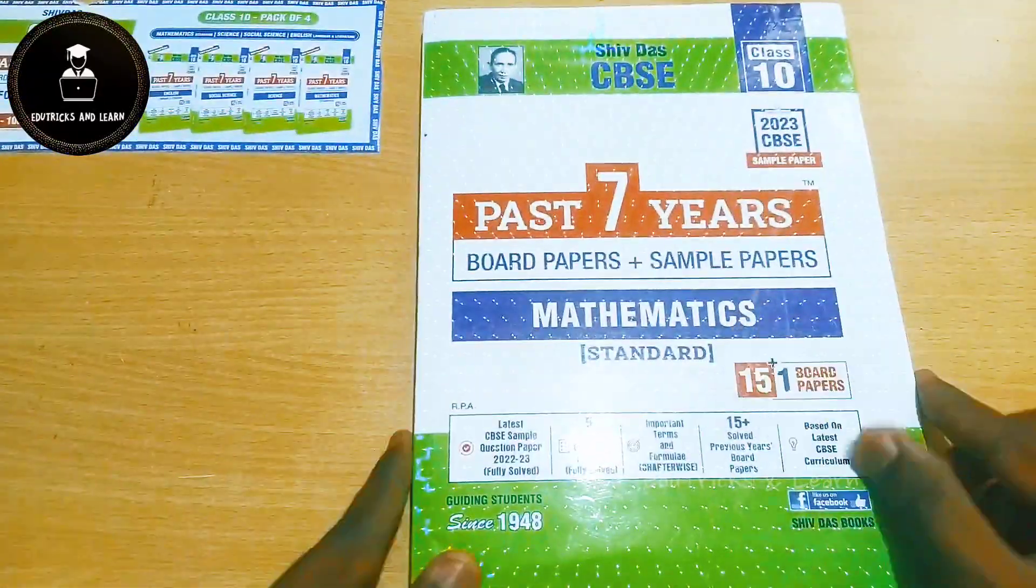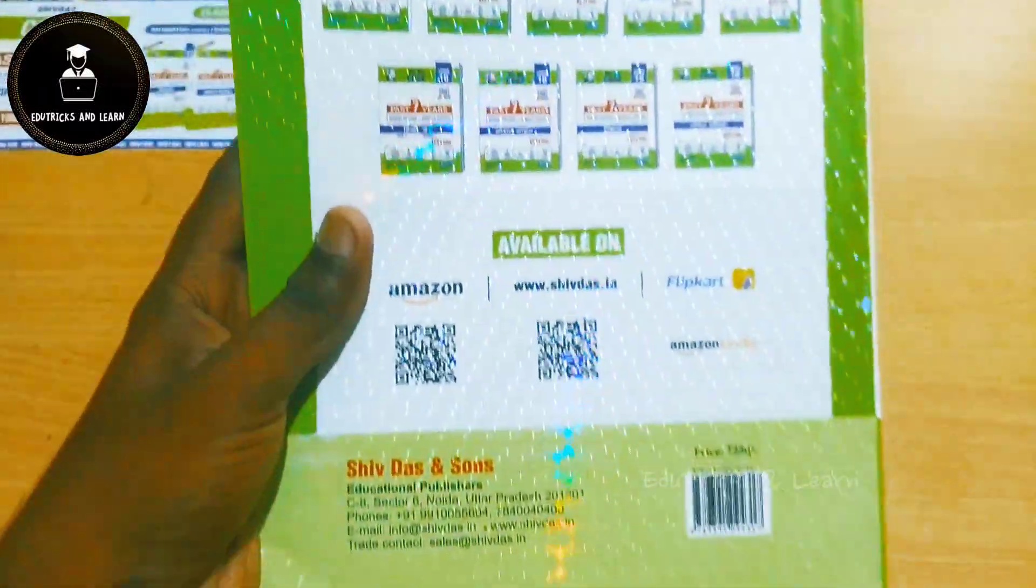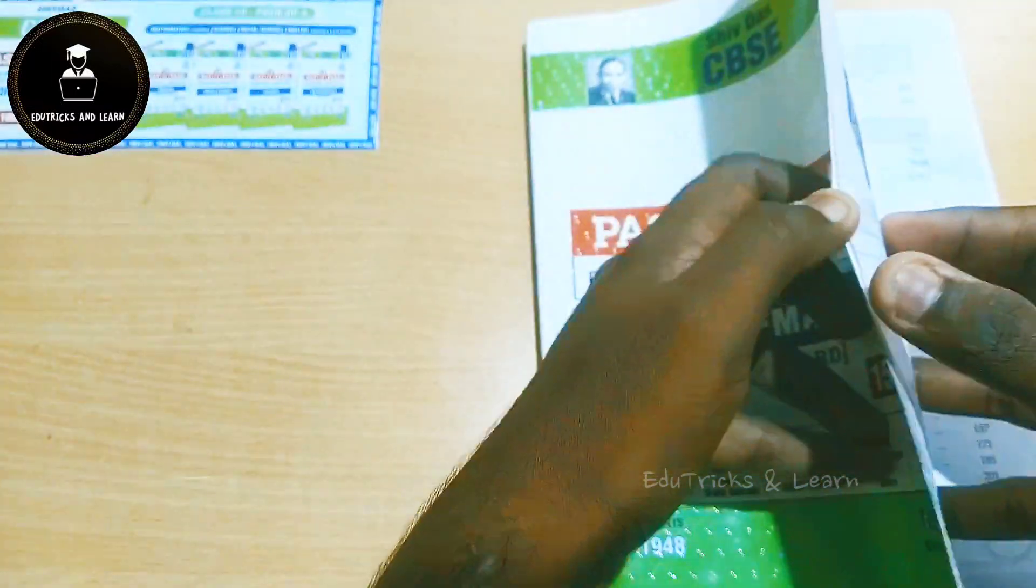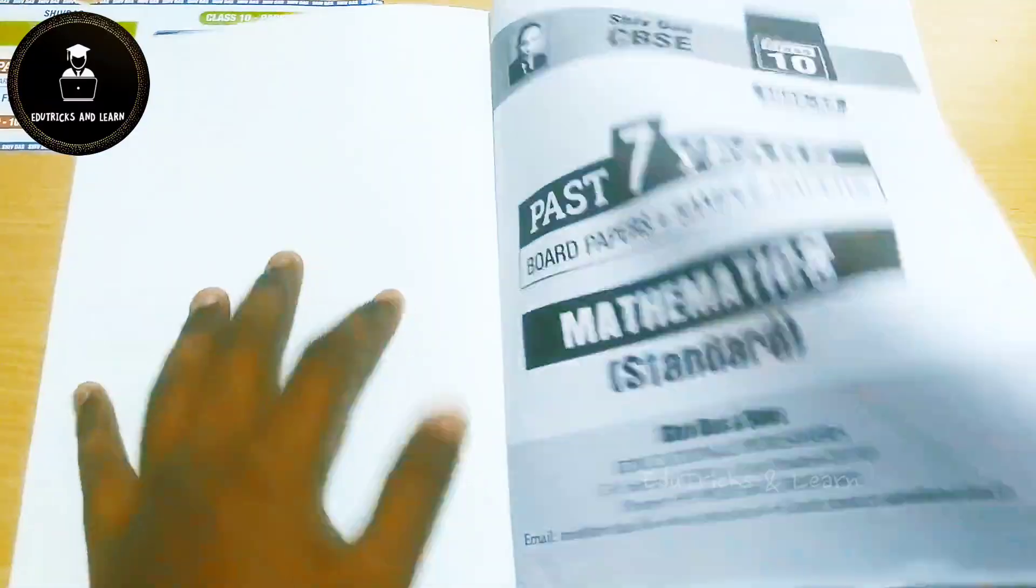Let's go into Mathematics deeper. This is the Shivdas past seven years board paper and sample paper. This book is also available for all subjects and the rate of the book is rupees 250, but if you buy on Amazon, Flipkart, or Shivdas own website as a combo, it will be much cheaper. So let's go into this book deeper.